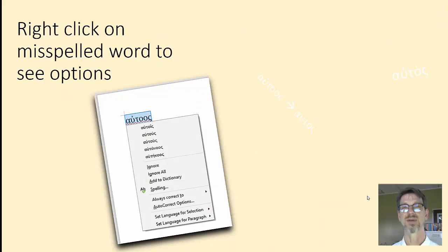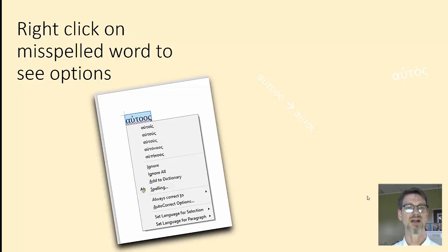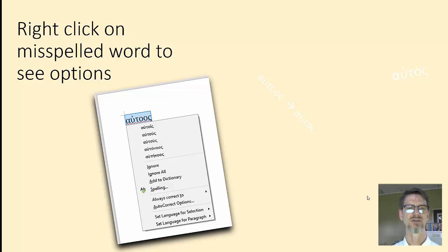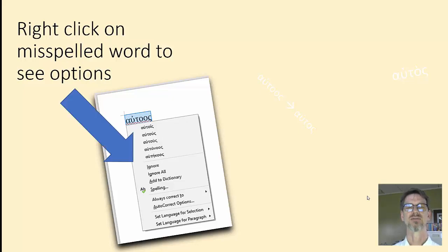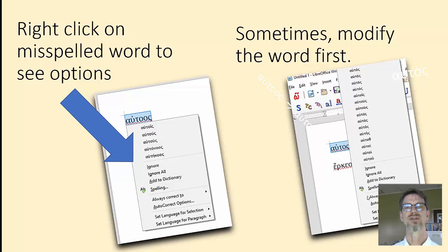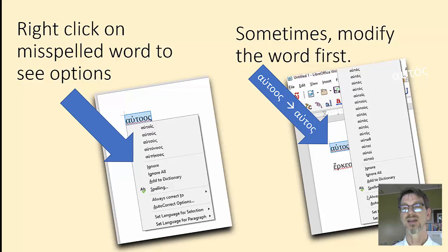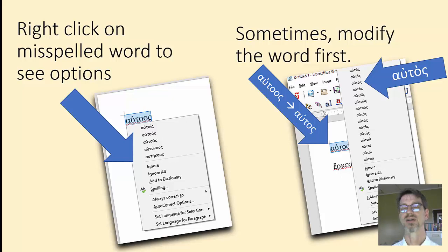So what does it look like? Here I have misspelled a word, and I right-click on it and it gives me some options — several suggested corrections. None of those may be the ones I want, so I might have to modify the word first. Here I'm going to modify it slightly, and then look at the options it gives me, and I pick the right one with the grave accent.